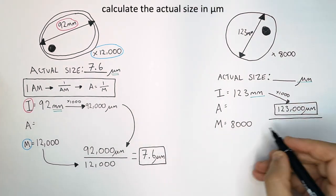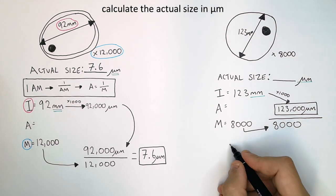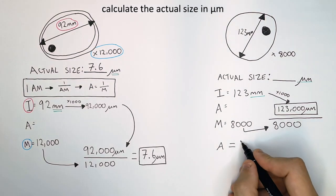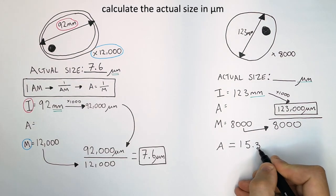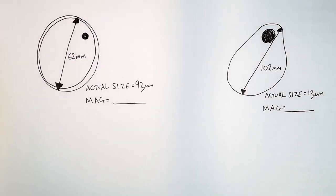Once you've done that, you've got the actual size. Actual size in this example is 15.37 micrometers. If you want to calculate the magnification by using image size in millimeters and actual size in micrometers, pause here.